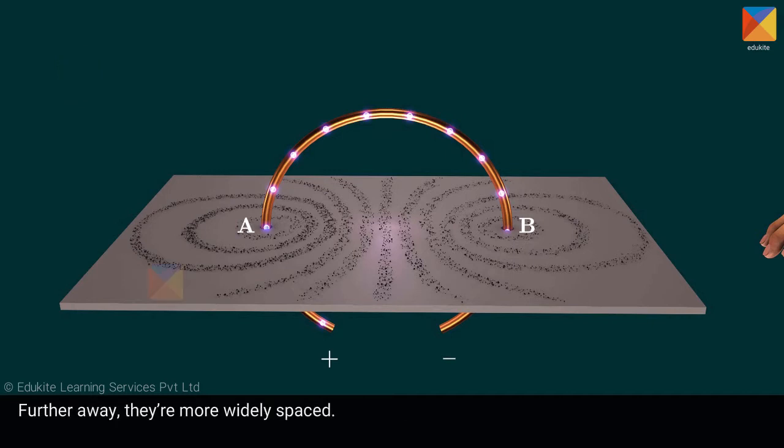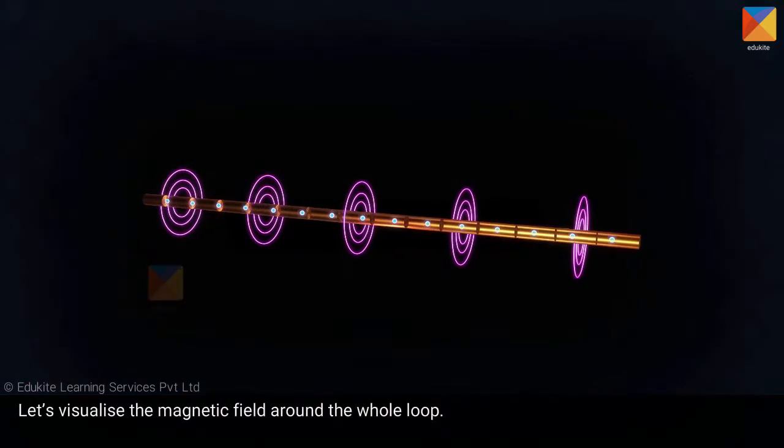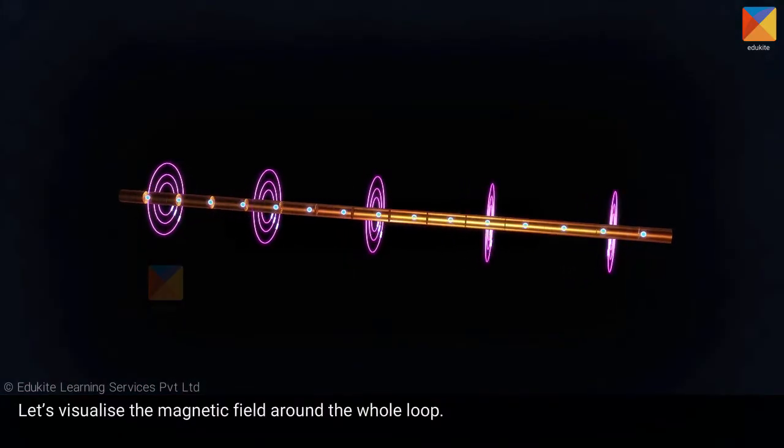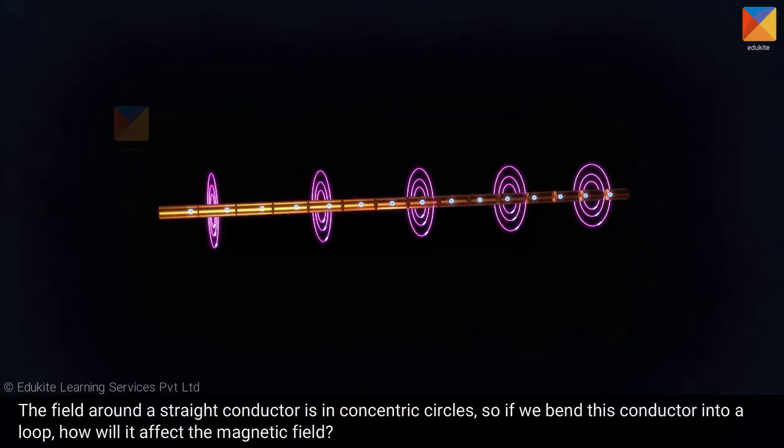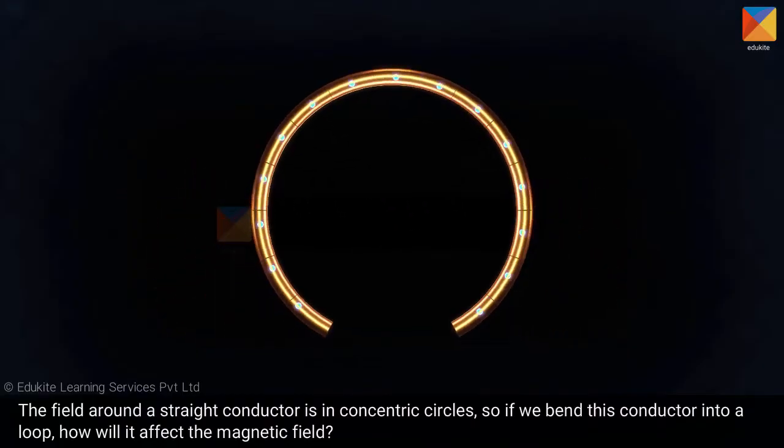Further away, they are more widely spaced. Let's visualize the magnetic field around the whole loop. The field around a straight conductor is in concentric circles. So if we bend this conductor into a loop, how will it affect the magnetic field?